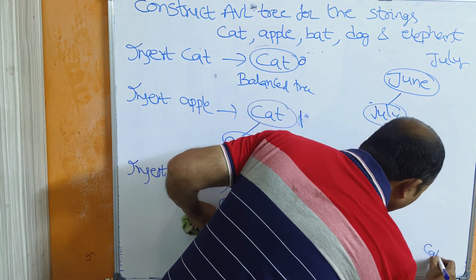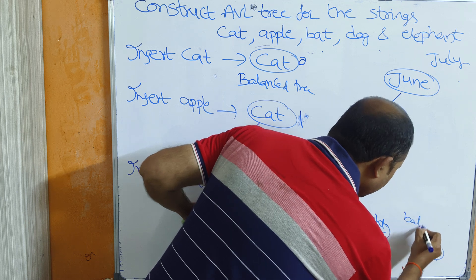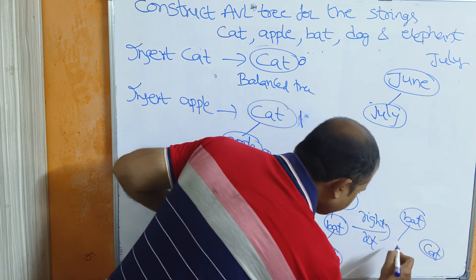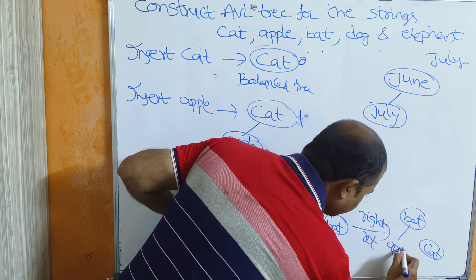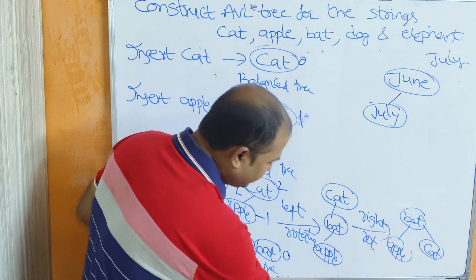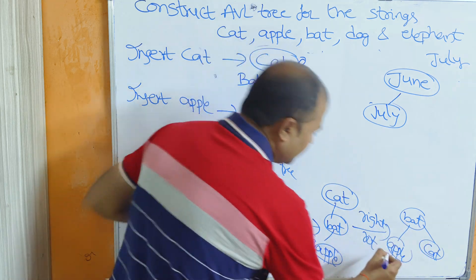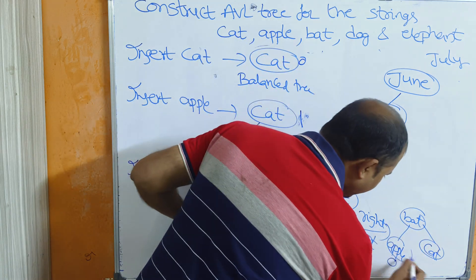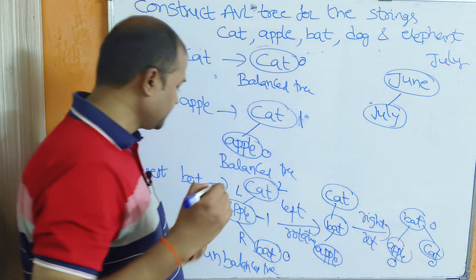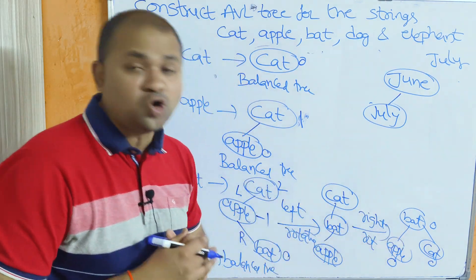Cat is rotated to the right, so bat becomes the root node. Bat's left child is apple and bat's right child is cat. If we calculate the balance factors: 0, 0, and 0 minus 0 equals 0. The tree is now balanced.